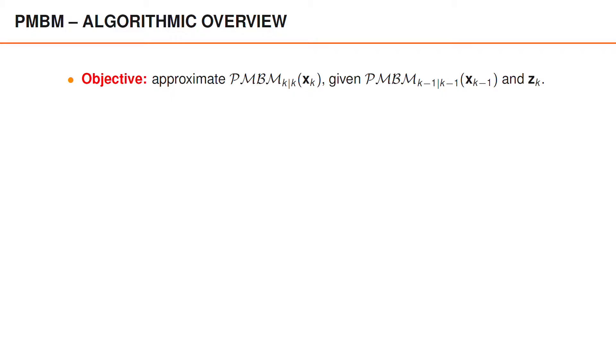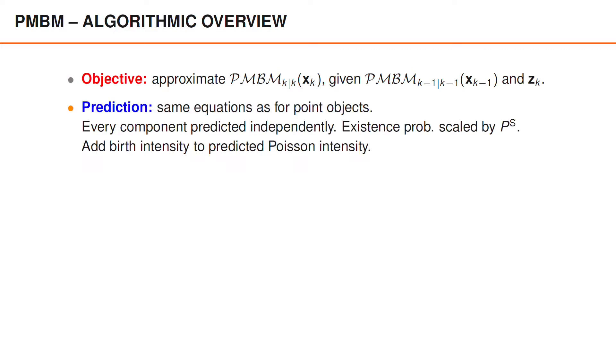Our objective is to obtain a tractable approximation to the PMBM posterior at time k, given the posterior at time k-1 and the measurements at time k. As usual, we do this using prediction and update steps, where the equations for the prediction step are the same as for point objects.